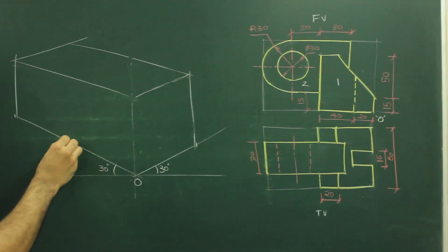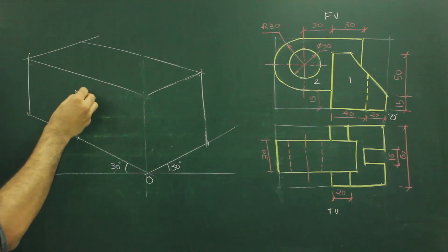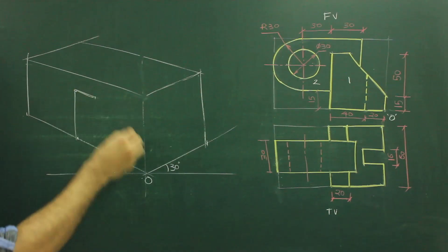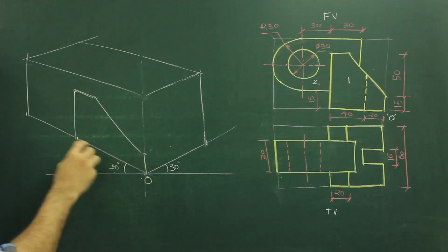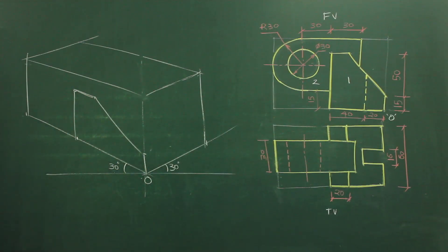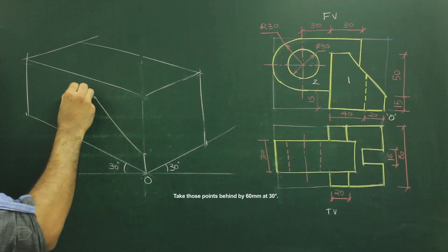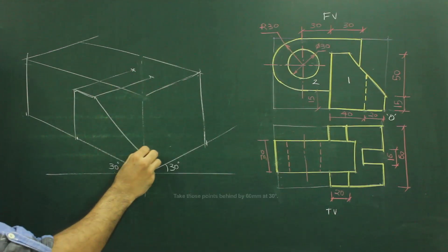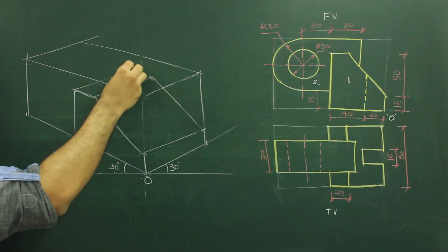We'll mark 60 over here, go up by 65, then go inside by 20, take 15 from here, and join this. In isometric, whatever is in the front the same thing is behind, so we'll take this point behind by 60 because width is 60, and join this. We are done with Part 1.